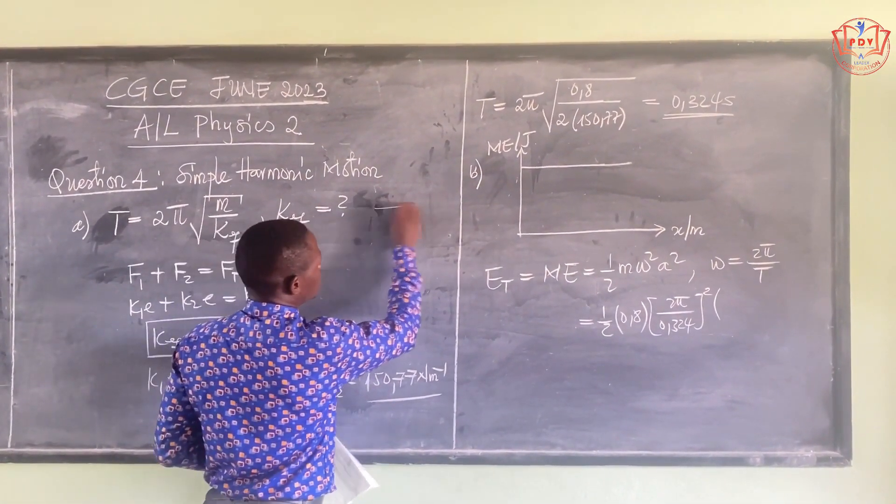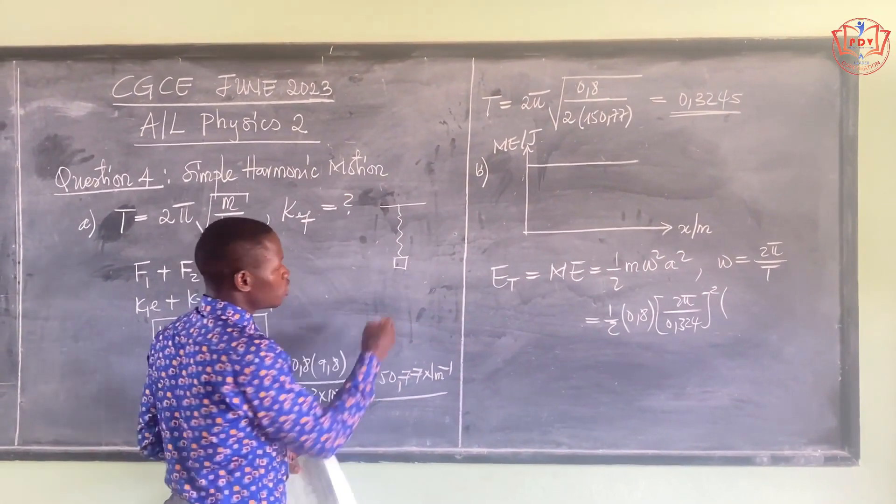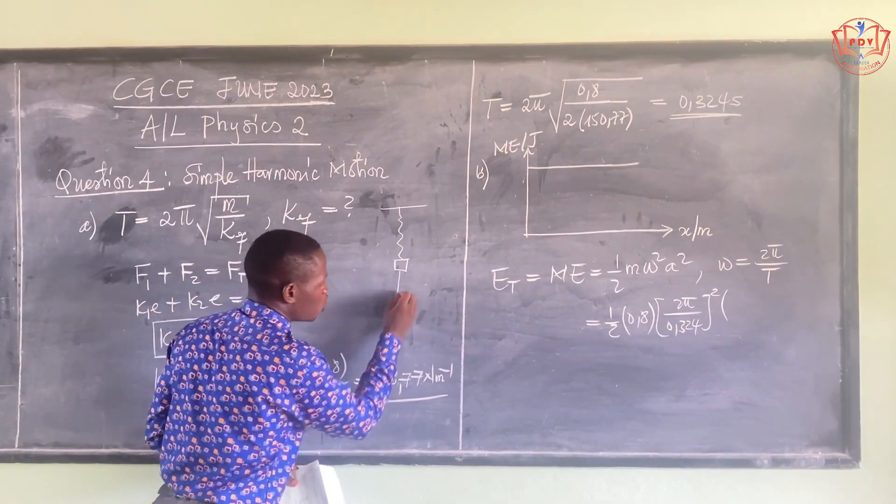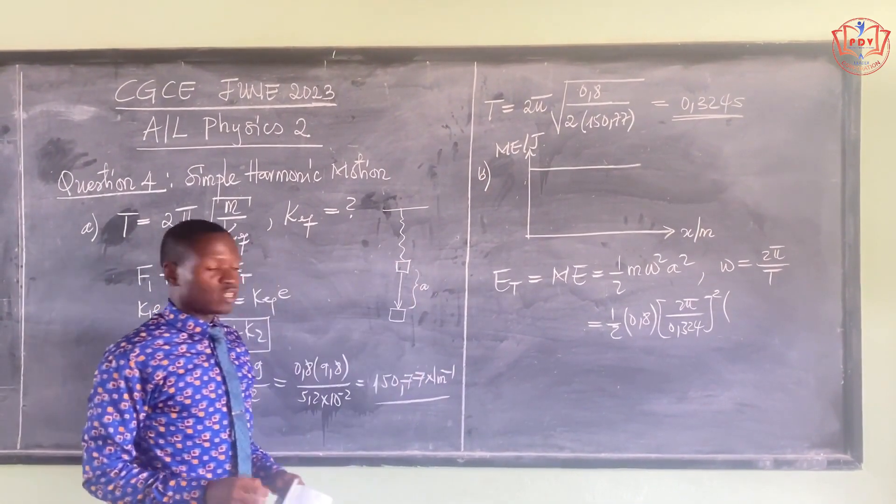So when you now pull it down further, when you pull the mass down further, this further distance is called the amplitude.